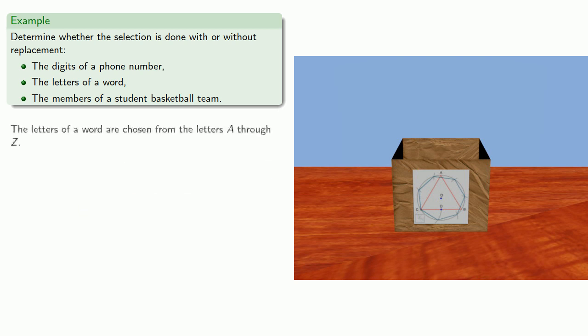The letters of a word are chosen from the letters A through Z, and again, since a letter can be repeated, the selection is done with replacement.